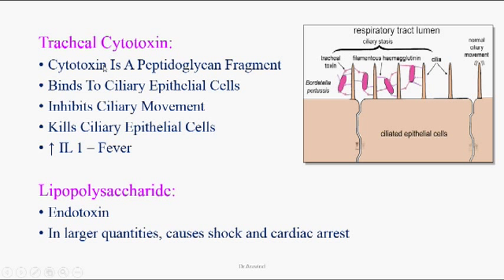Tracheal cytotoxin is a peptidoglycan fragment — a cell wall fragment. It always binds to ciliated epithelial cells and, after attachment, inhibits ciliary movement and destroys ciliated epithelial cells. The organism attaches to ciliated cells with the help of tracheal cytotoxin and filamentous hemagglutinin, inhibiting ciliary movement.